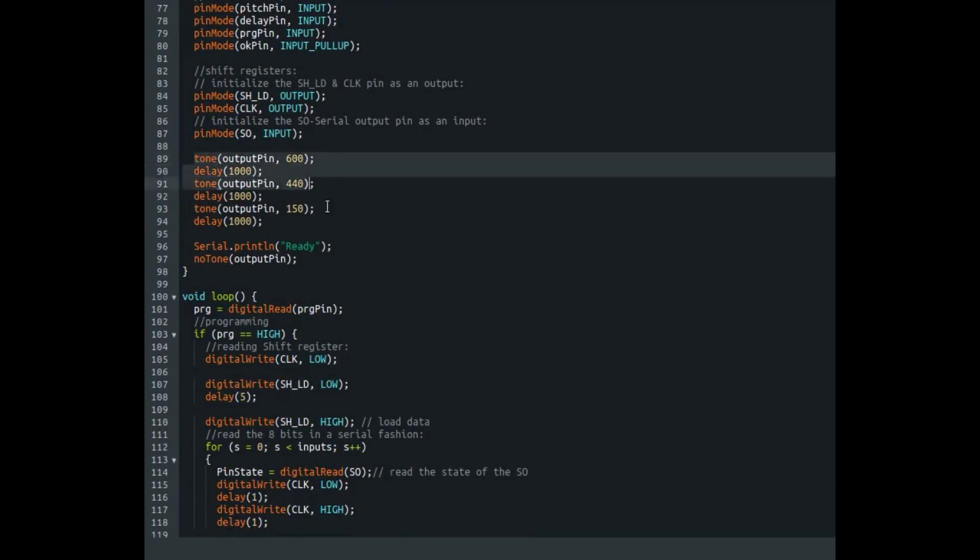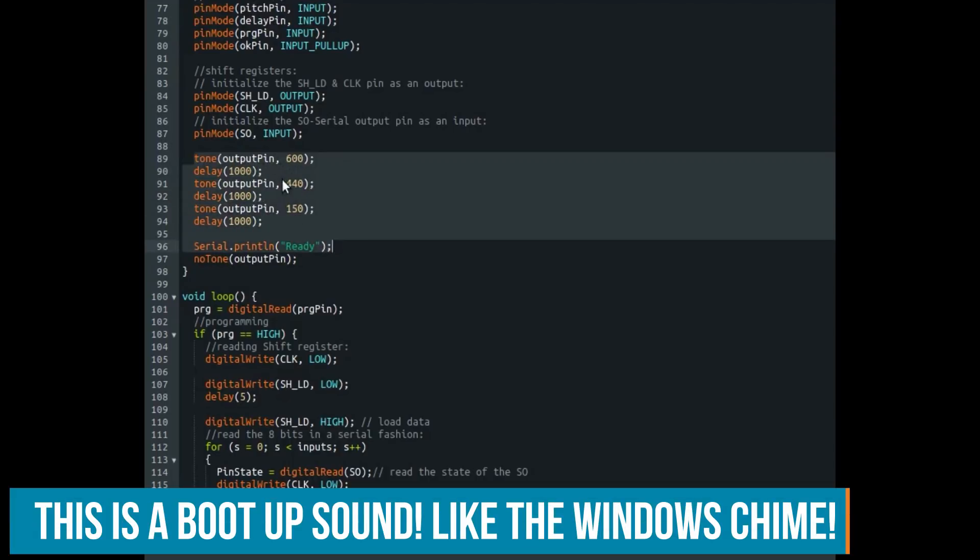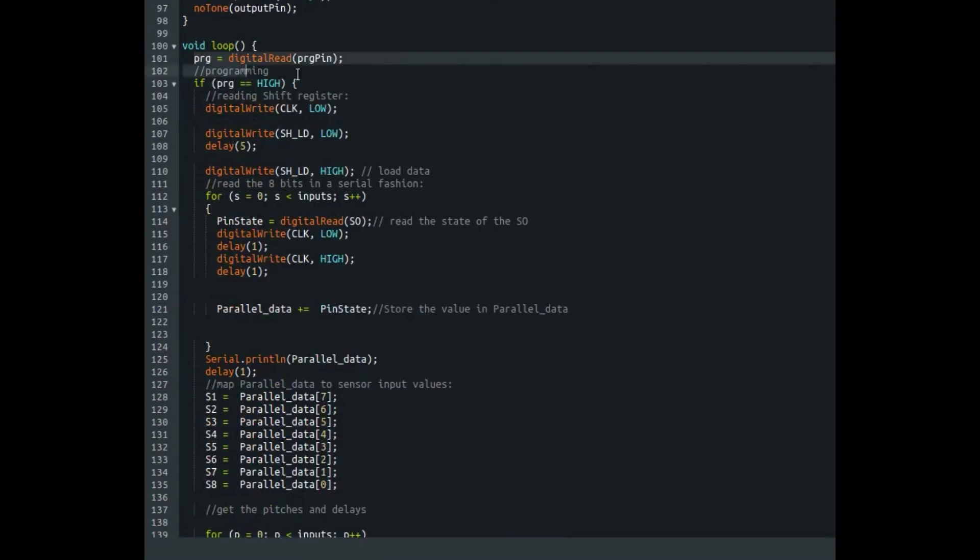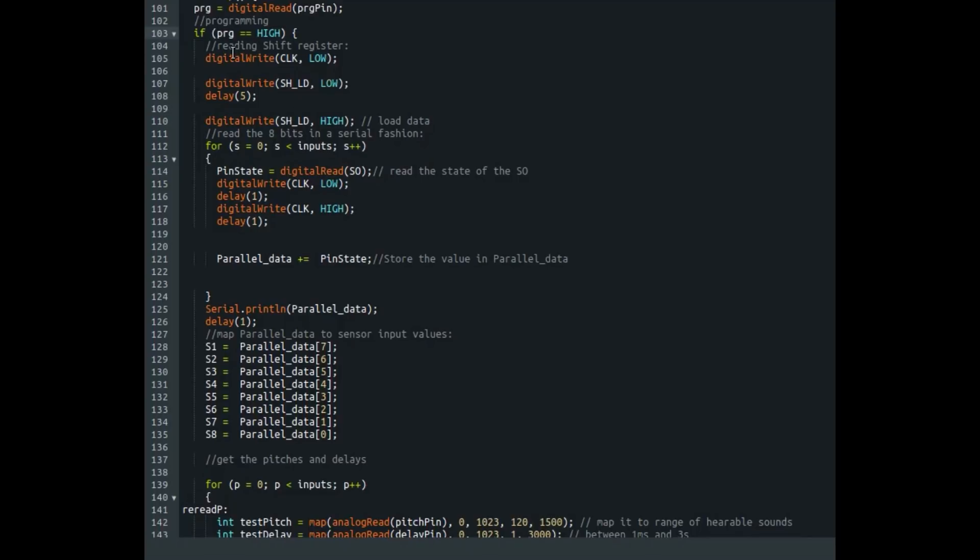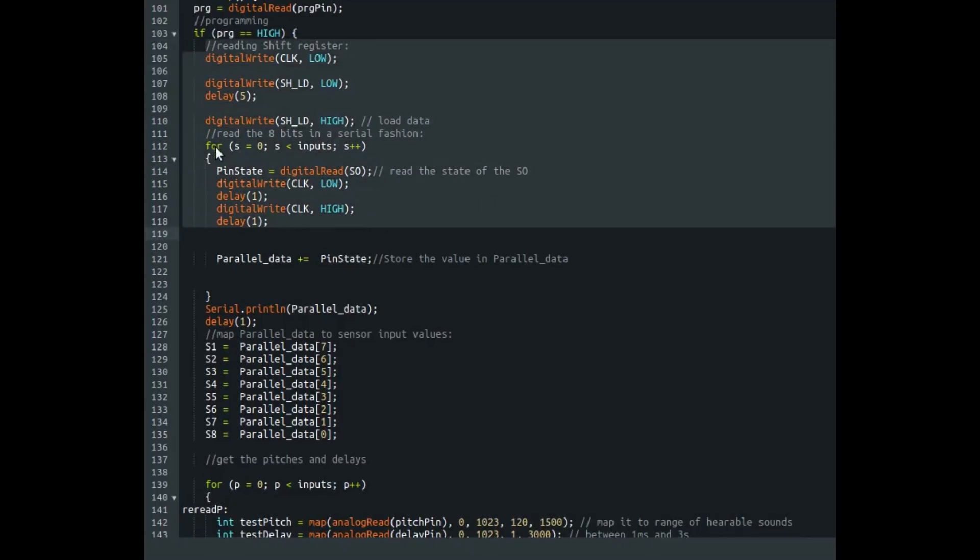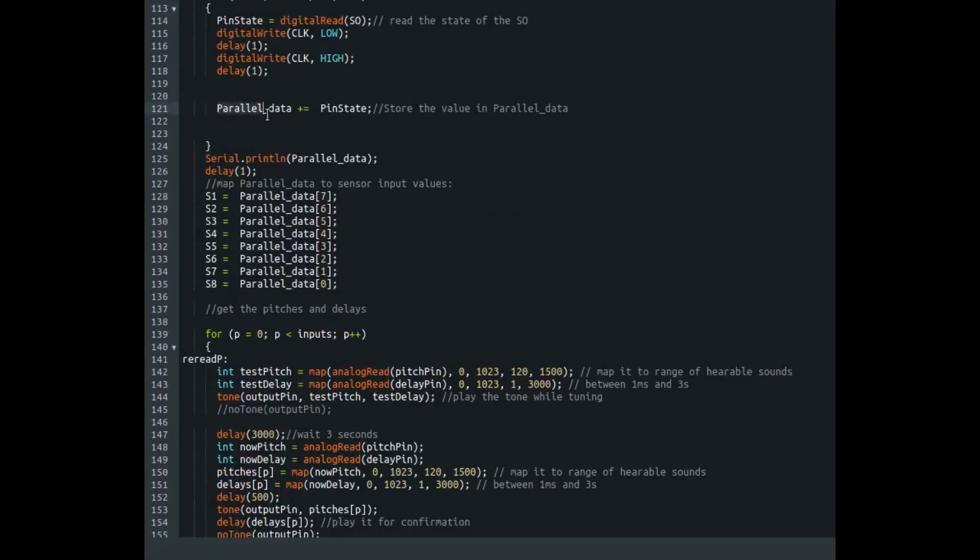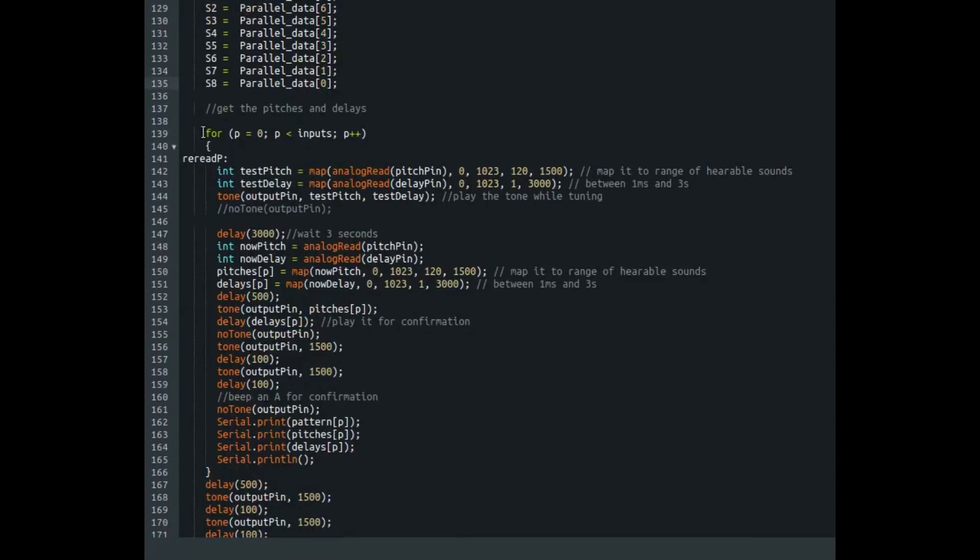And this tone function gives us a ready signal. So it will play these three notes. And we know, OK, everything has booted up. After that, it will check if it's in the programming state. If that is true, it will read the shift register with this piece of code. This for loop loops over and over, so it gets all the inputs. And when it has them, it will write it to parallel data and store these parallel datas in the respective variables.